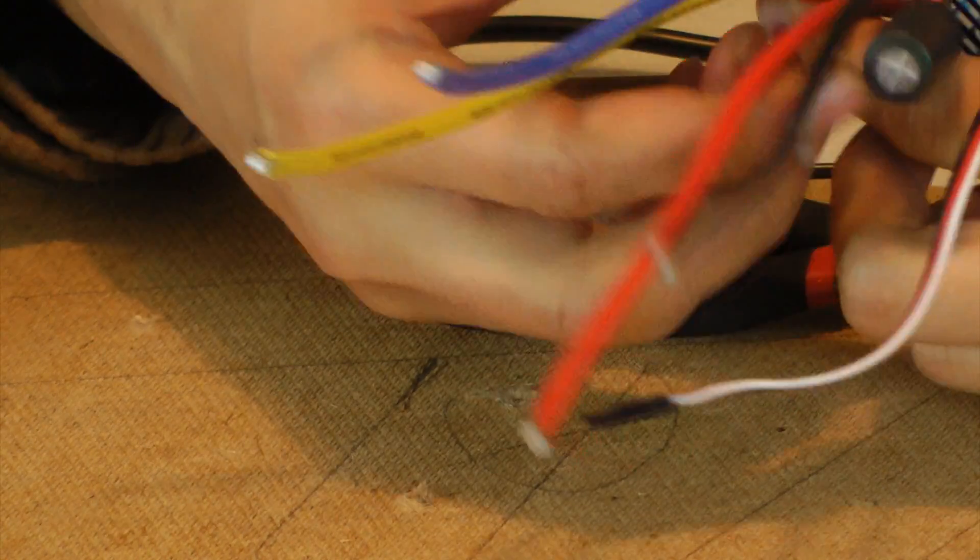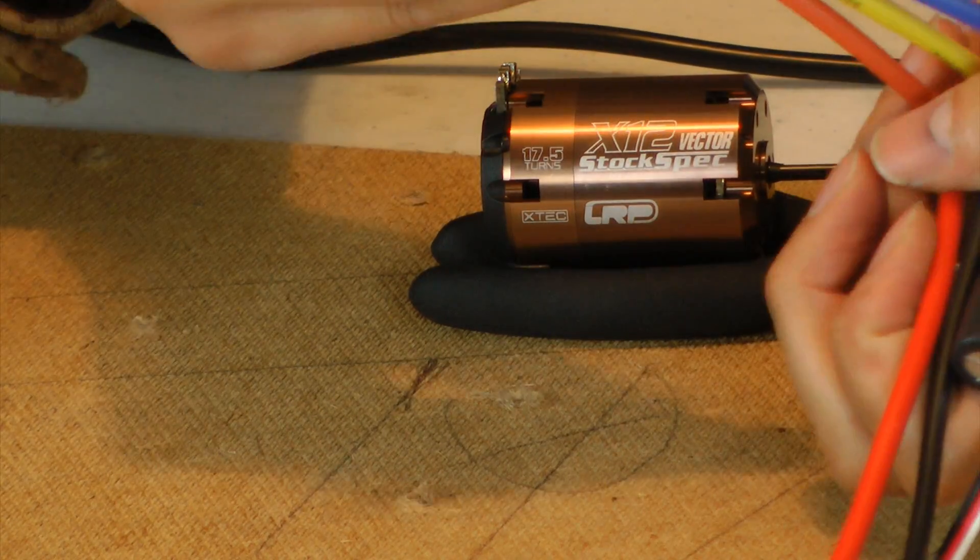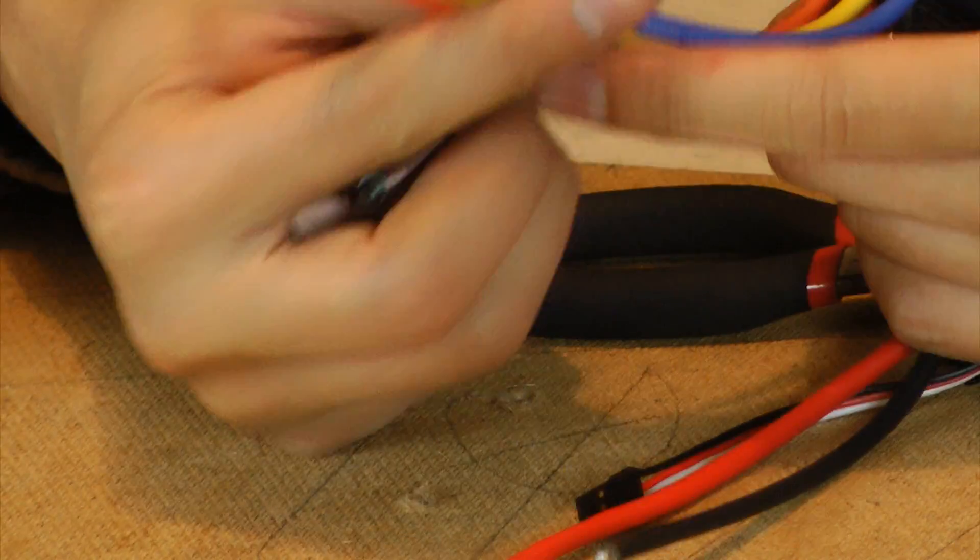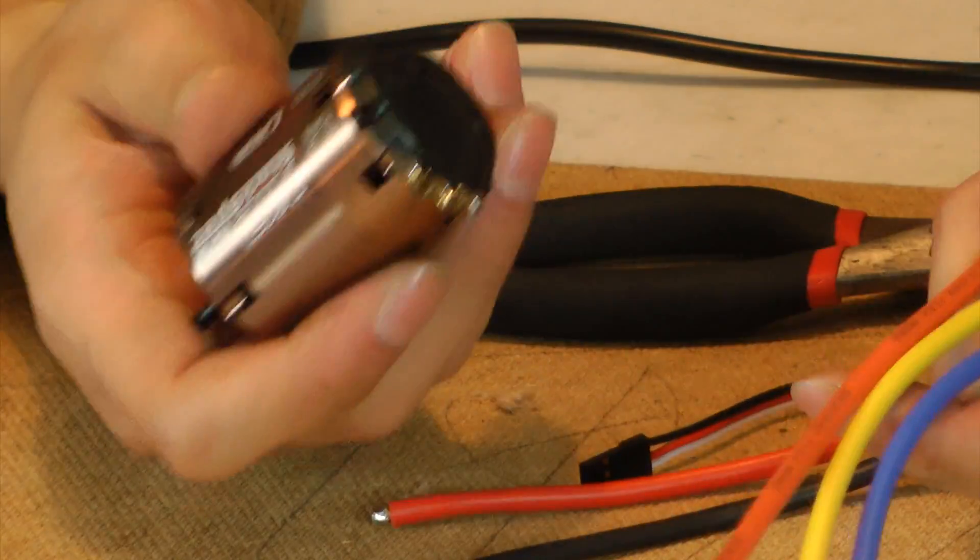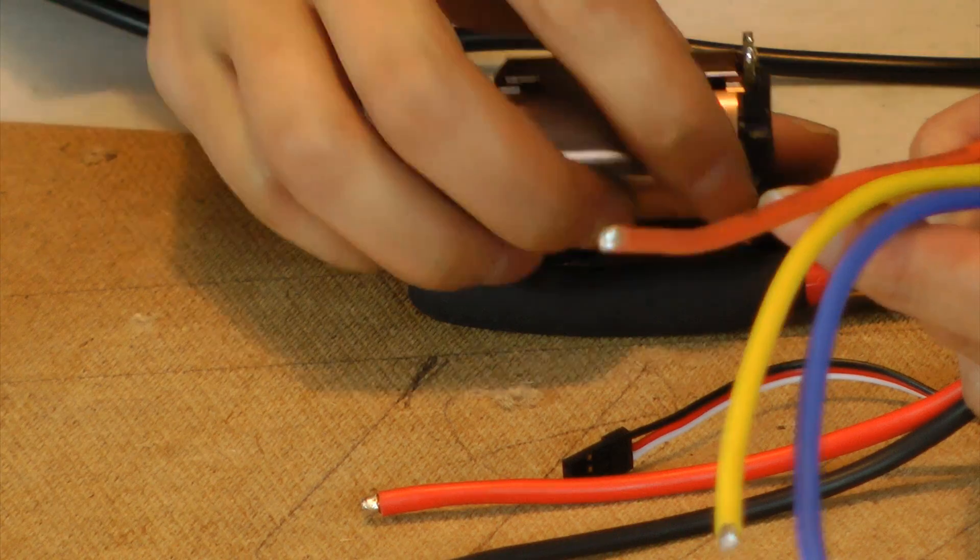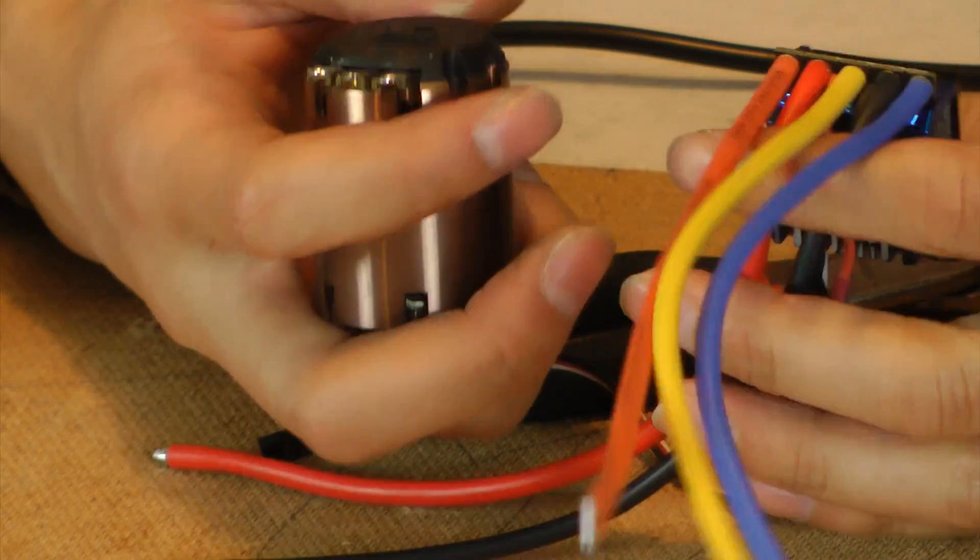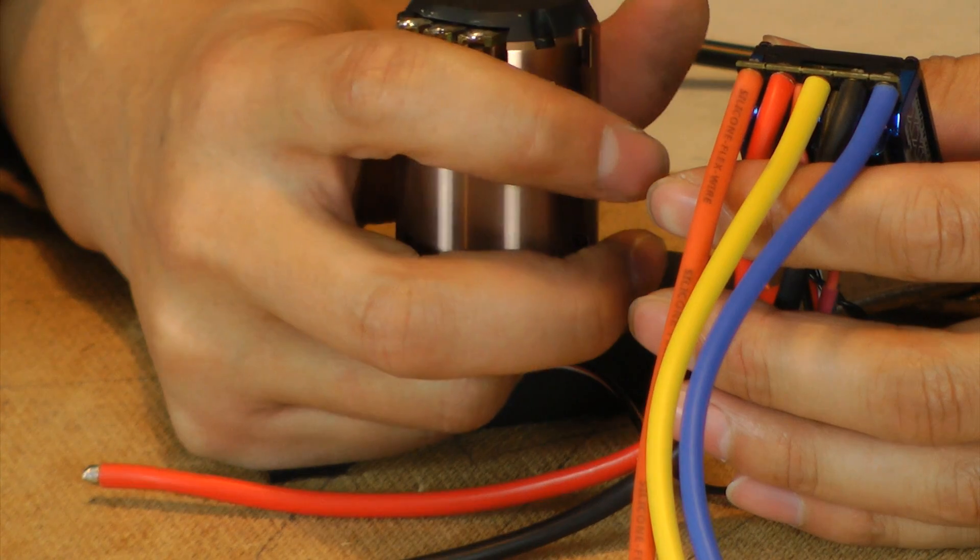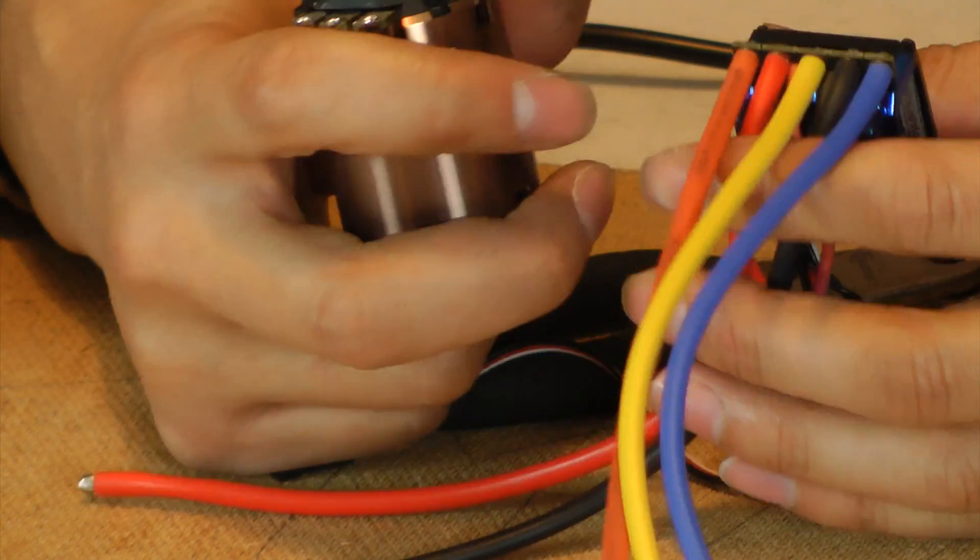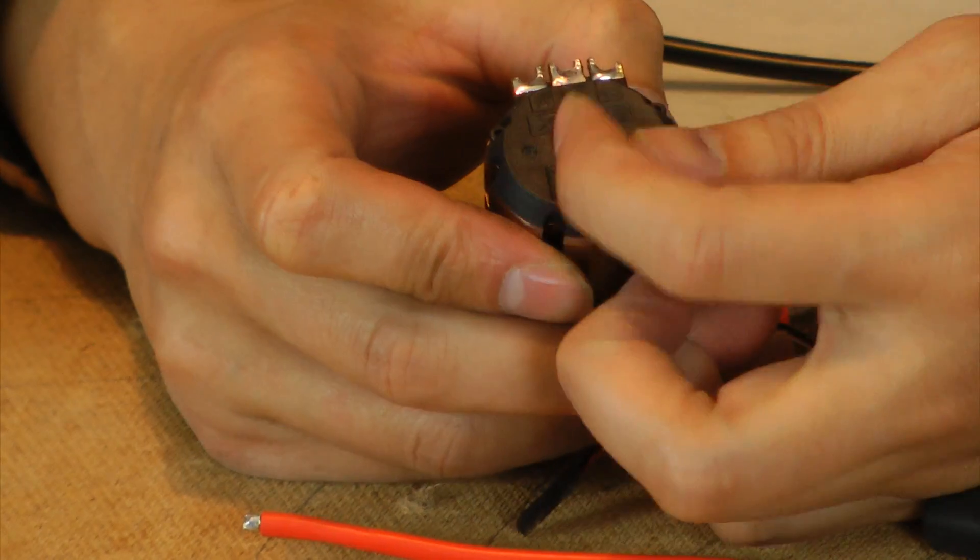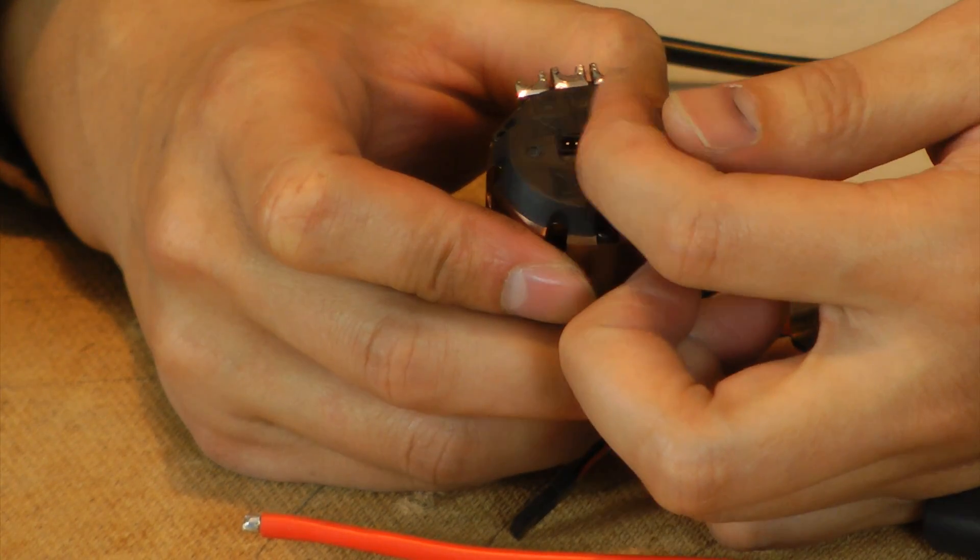The next thing now is to actually attach the ESC motor cable to the motor itself. And for this, you're going to have to pay attention to which wires go where. On the motor, you can see it's labeled ABC going this way.